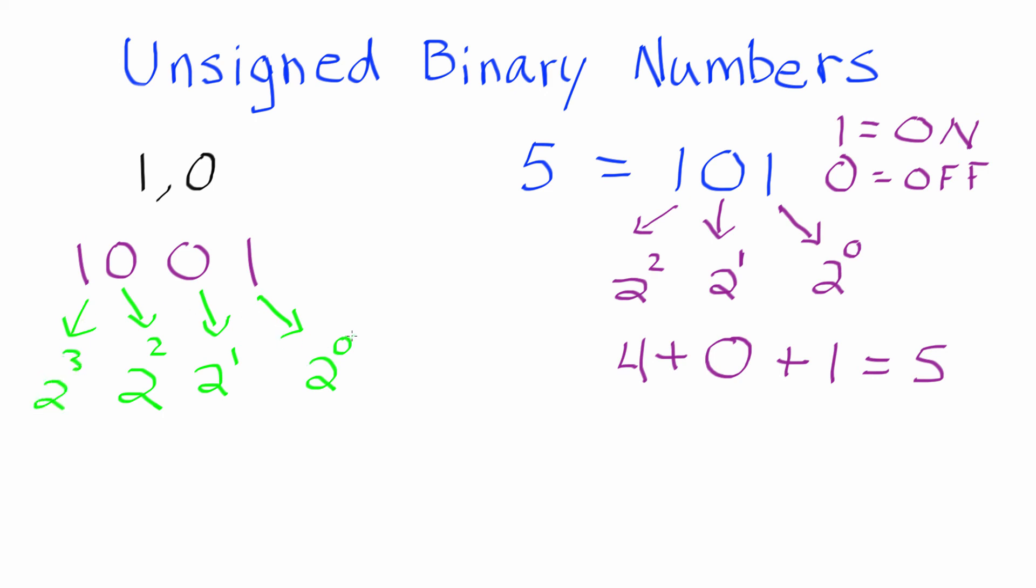So 2 to the 0 power is equal to 1. 2 to the 1st power equals 2, but this has an off switch since we have the 0 there, so we'll just put 0. 2 to the 2nd power is equal to 4, but that's off, so we'll put a 0 here. And 2 to the 3rd power is 2 times 2 times 2, which equals 8. So we'll put an 8 right here.